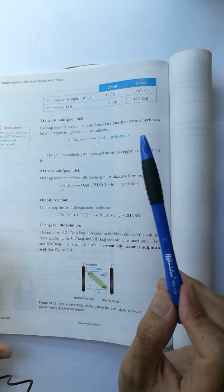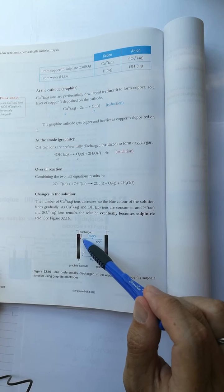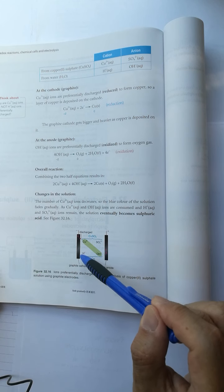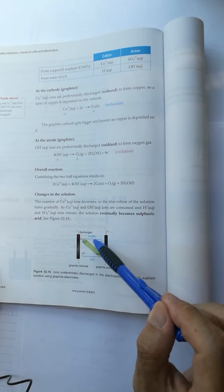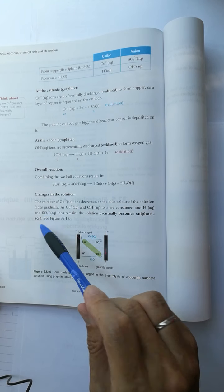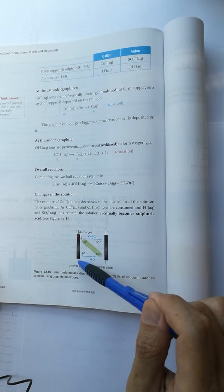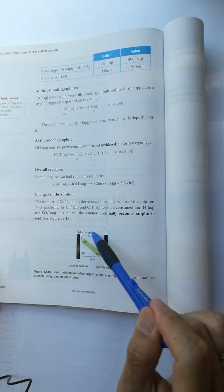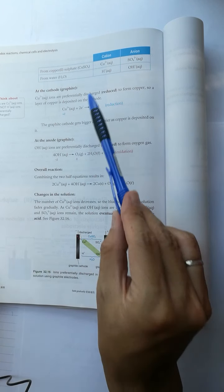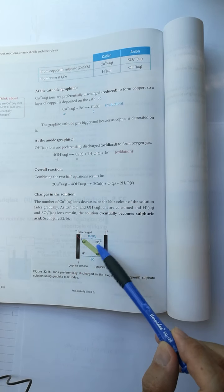Looking at the solution, the copper(II) ion and hydroxide ion are discharged, so what's left behind is hydrogen ion and sulfate ion—sulfuric acid. The change is from copper(II) sulfate solution to sulfuric acid.